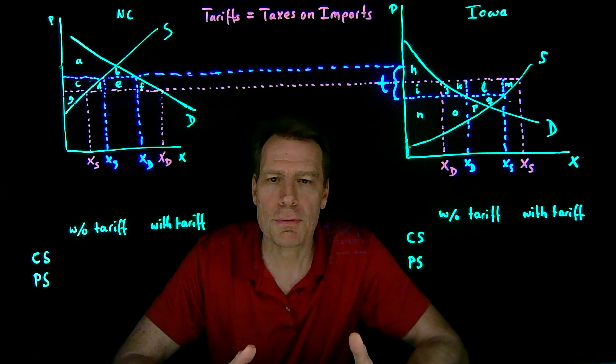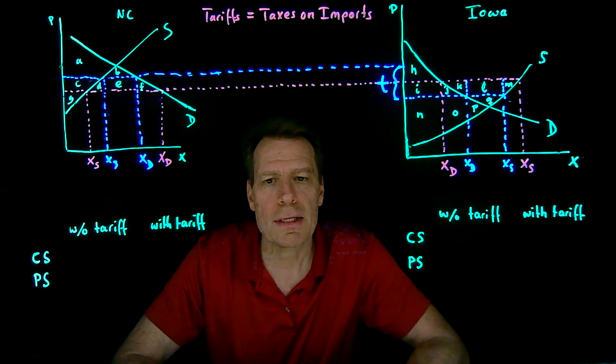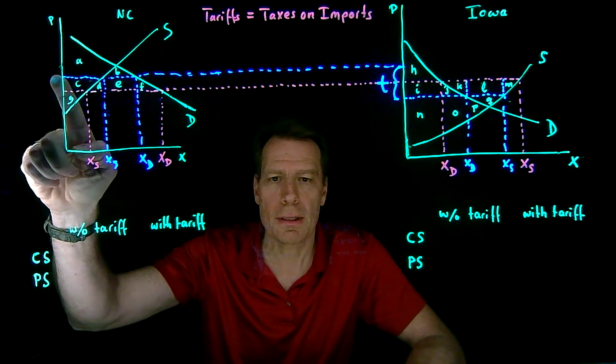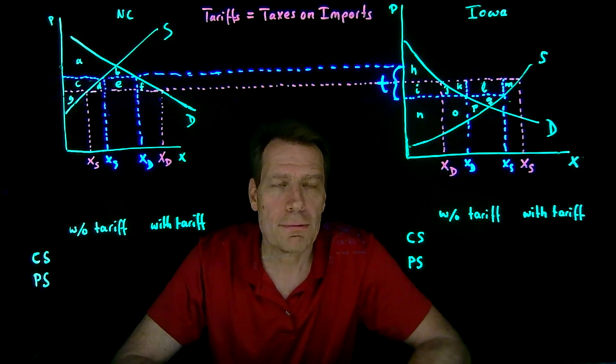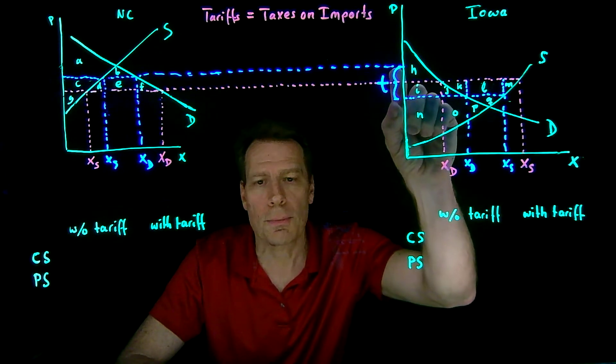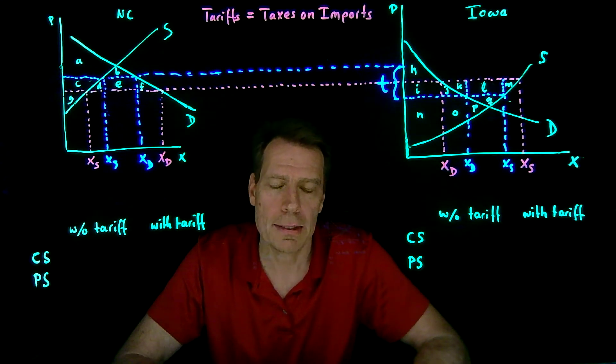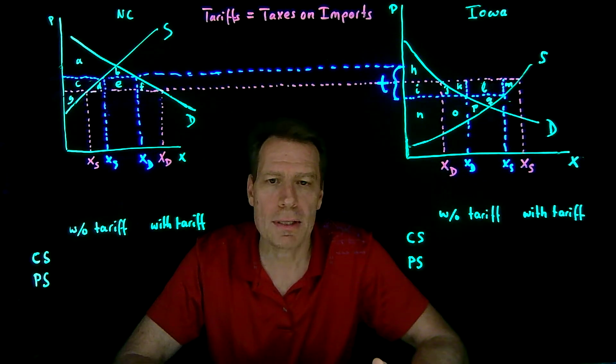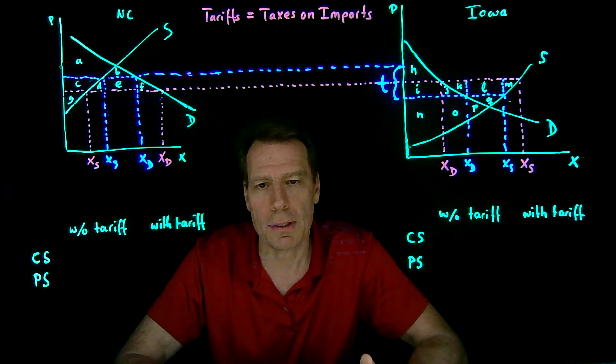We've now seen how the imposition of a tariff on Iowa corn sold in North Carolina creates a difference in the prices that emerge in North Carolina and Iowa, with a higher price emerging in North Carolina and a lower price emerging in Iowa. And that difference was exactly equal to the per unit tax that's being imposed on Iowa corn in North Carolina. It's a compensating price difference. It compensates exporters for the tax that they have to pay when they bring goods into North Carolina.